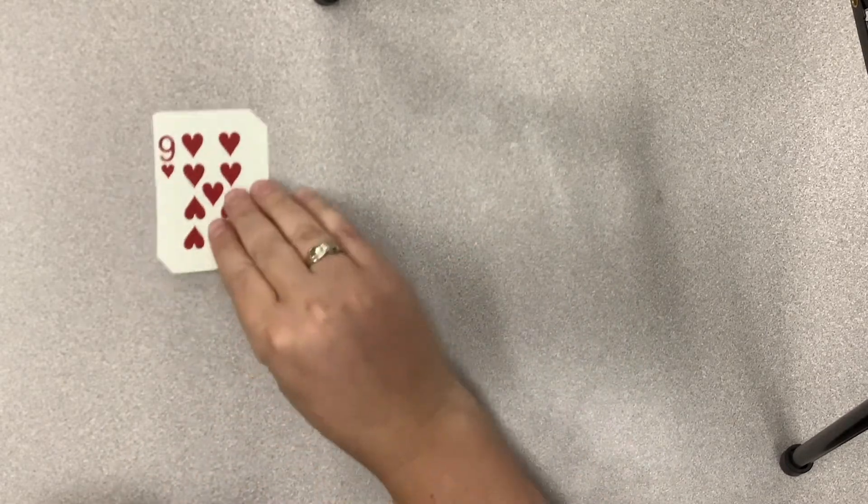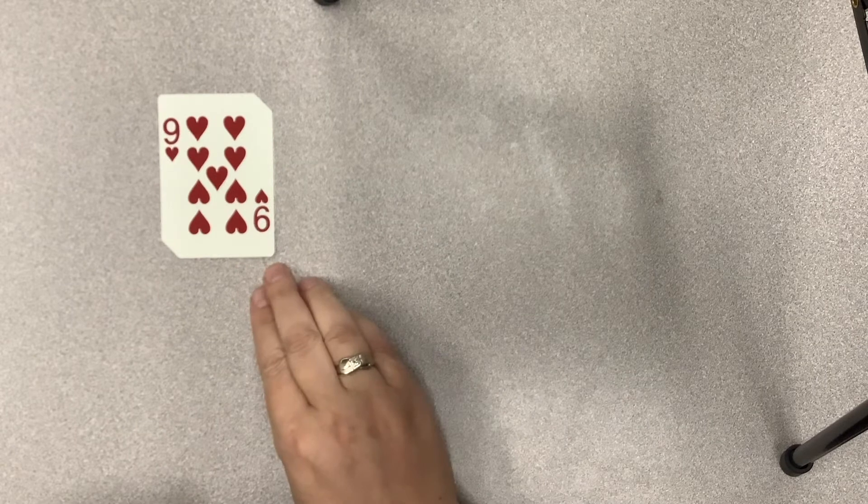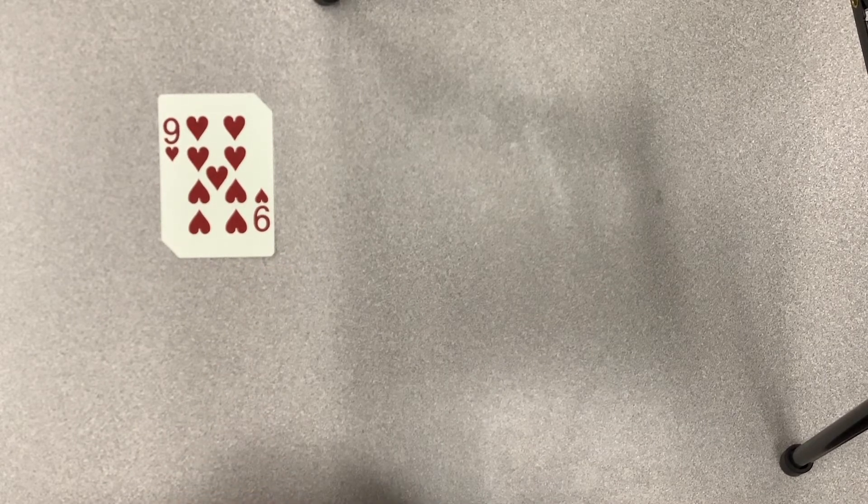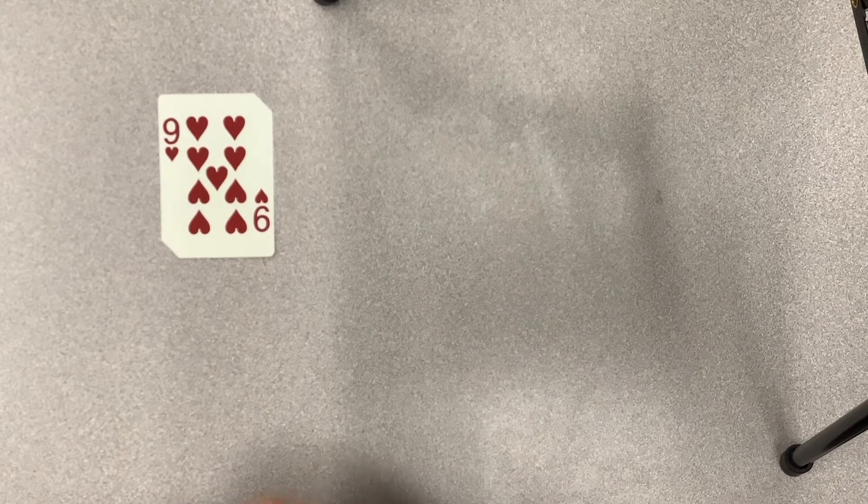So first you're going to put a card face up. This is a nine, so then I'm going to put cards on top of it. The cards on top don't matter, I'm just counting them from this number up to ten. So that's nine, ten, I'm done.